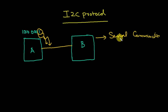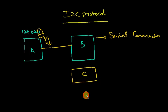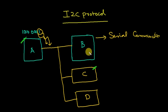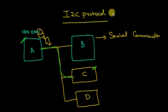If I have devices C and D, I can send data from A to B, C, and D. But what if my requirement is to establish communication only between A and C, and no other devices should respond or receive the data? Is it possible? Yes, it is possible — but not using a simple shared line. We need to use a protocol. With a seven-bit address, we can connect up to 128 devices.